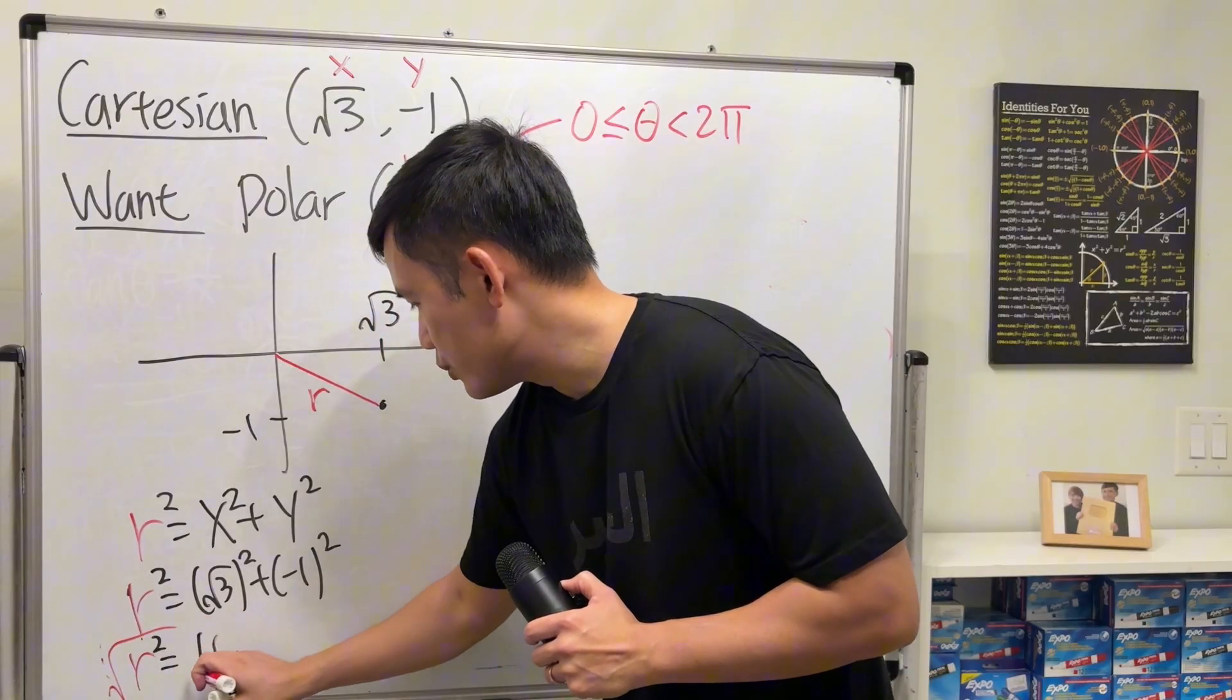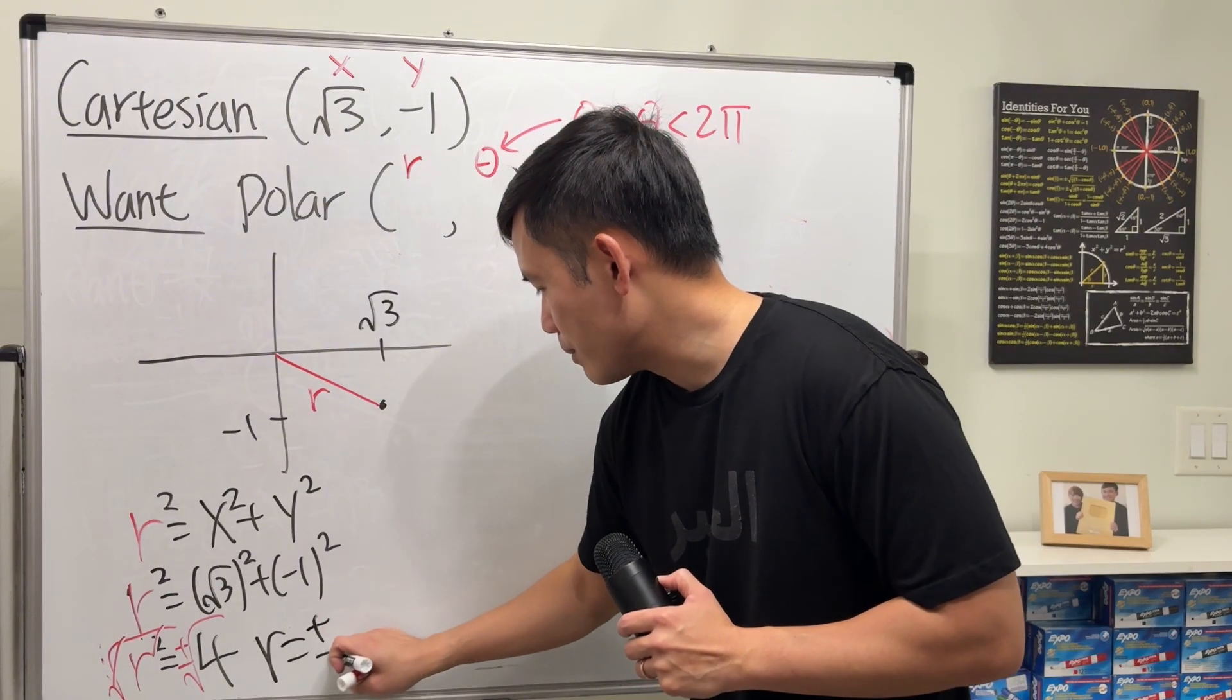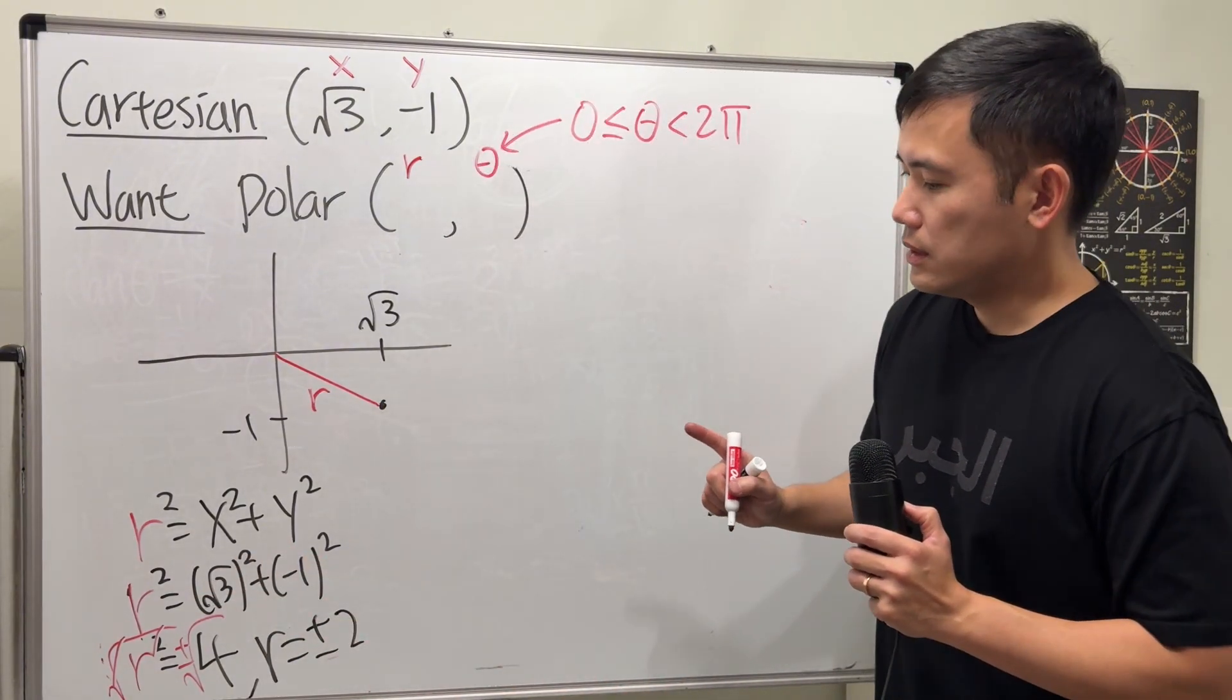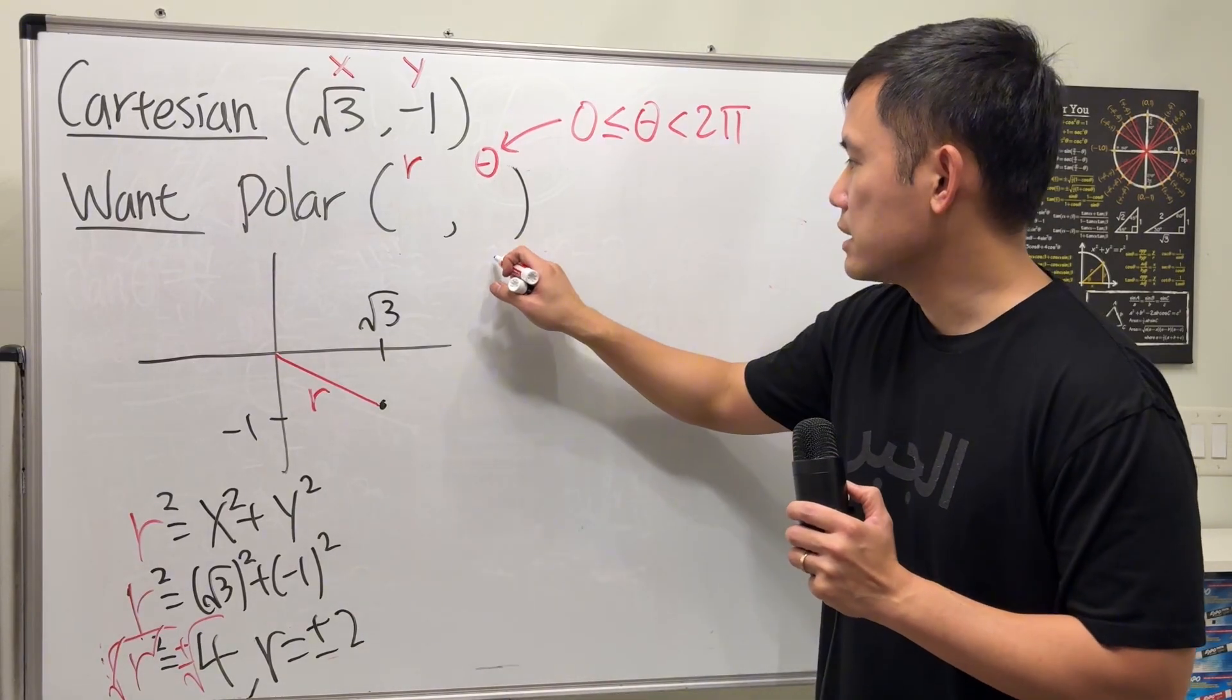And then remember, take the square roots of both sides. We really have r = ±2. We have two answers. So the first thing is that, let's figure out the corresponding angle when r is positive 2.